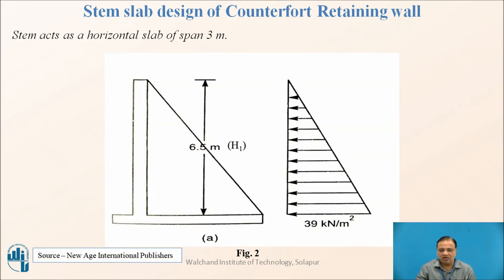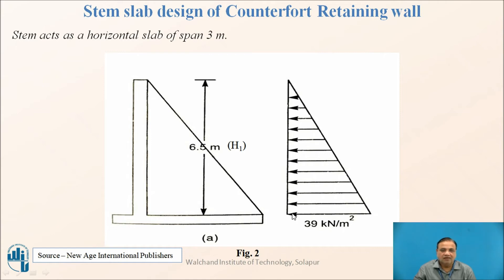From the pressure diagram, the pressure is maximum at the bottom of the stem slab and reduces linearly towards the top. Therefore, the spacing calculated for horizontal steel will be kept only up to 1.5 meter from the base. Above that, we provide minimum reinforcement because the pressure reduces when going towards the top.